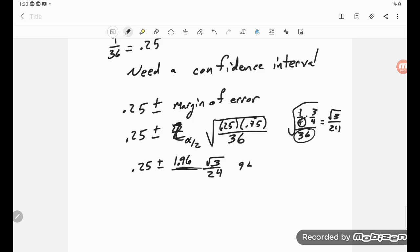So that's 95% confidence interval. If you went with a 90% confidence interval, that number is 1.645 times square root of 3 over 24, 0.25 plus or minus.